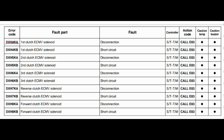Error code DXH4KA. The faulty part is the first clutch ECMV solenoid. The fault is disconnection. The steering and transmission controller is related to this fault. Action code is E03, caution lamp will blink, and caution buzzer will beep.